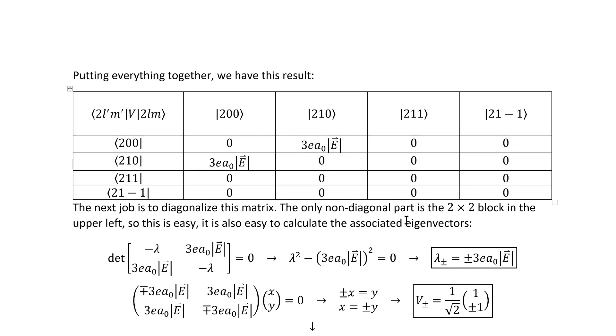If we put that all together, we arrive at this matrix, and we're ready to diagonalize. This is pretty easy, because we actually only have to diagonalize this two-by-two submatrix.